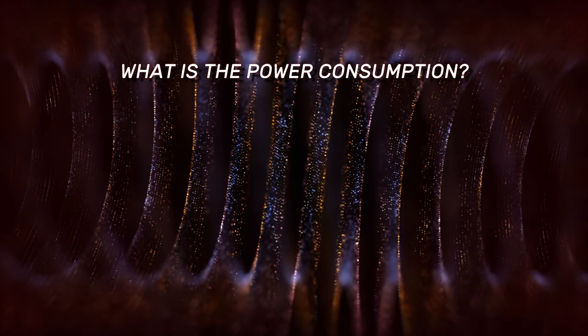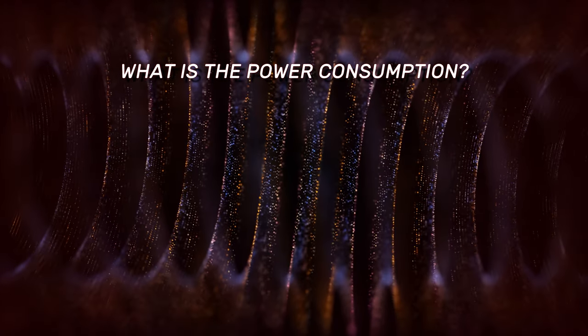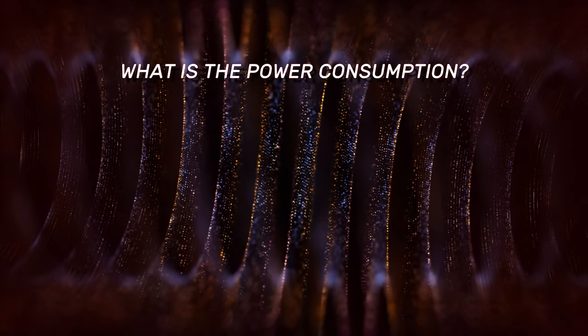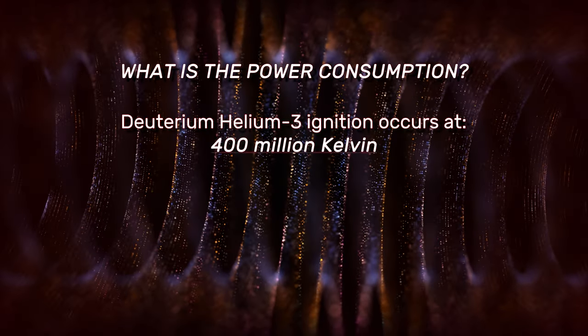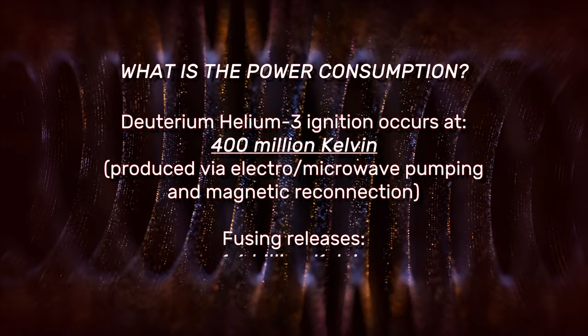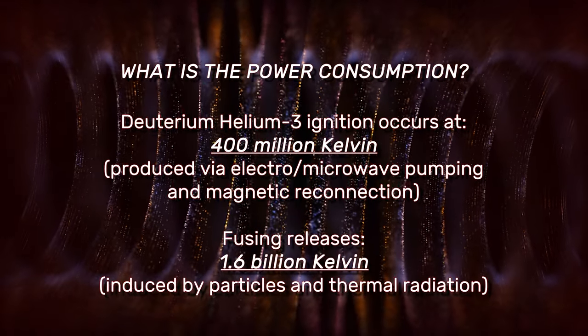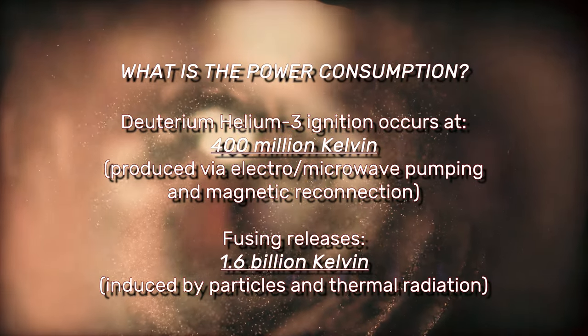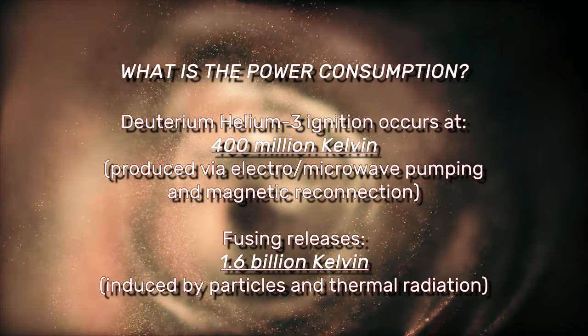Deuterium-tritium needs about 100 million Kelvin, while deuterium-helium-3 ignition occurs at 400 million Kelvin and fuses at 1.6 billion Kelvin. The unique combination of hot plasma and magnetic reconnection available to direct fusion systems means achieving these temperatures is possible even today.